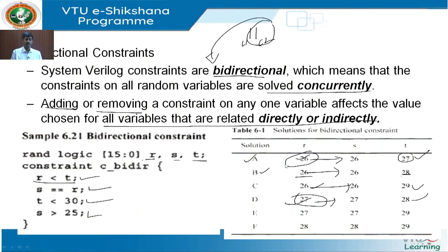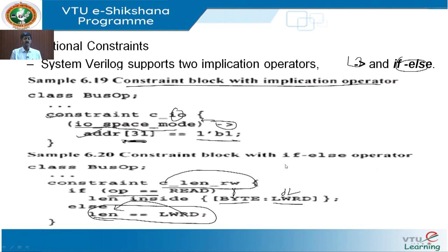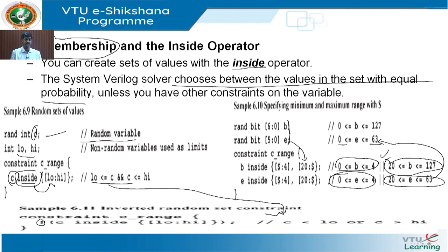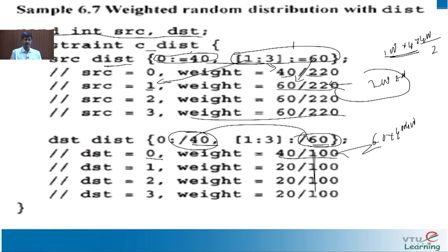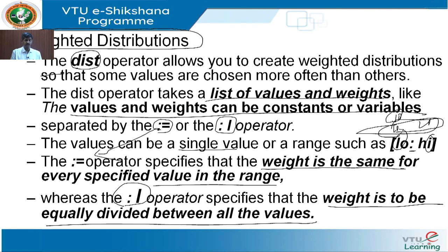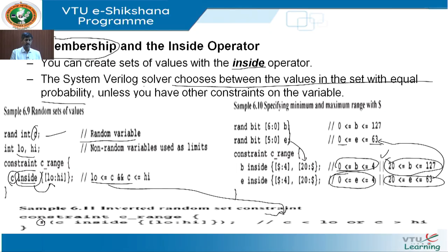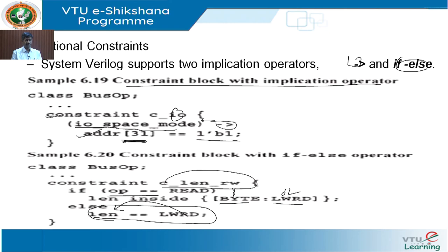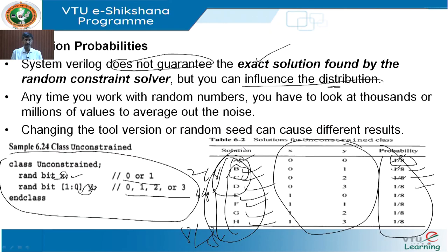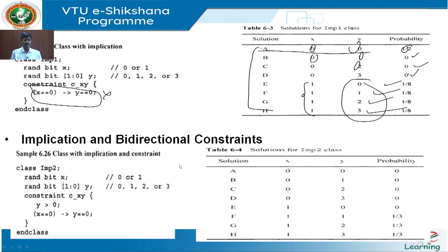Welcome back. As we are discussing the solution probabilities, we have seen the four operators: the bi-directional forwarding, if-else implication operators, inside operator, and weighted distributions in randomization. Now let us look at the implication and bi-directional constraints and how they will be taken care of.